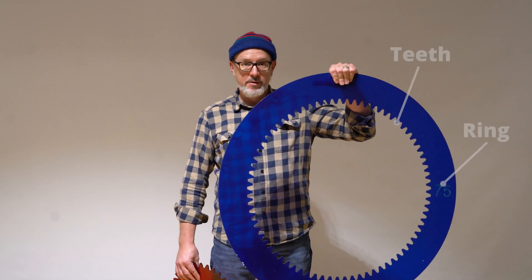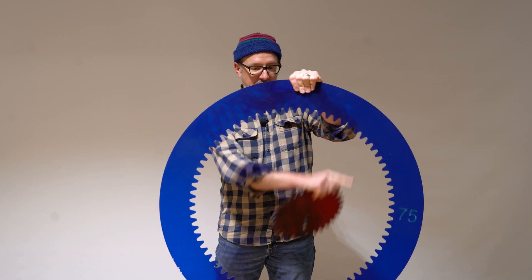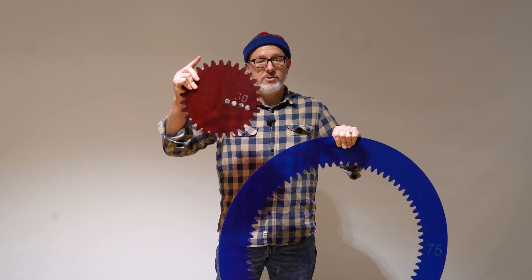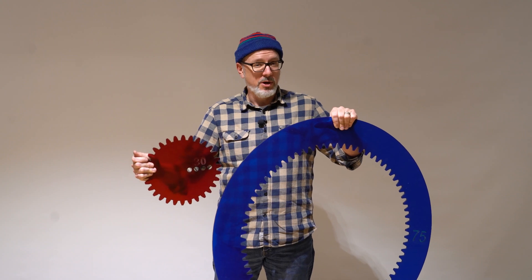Let's talk about the parts of a spirograph. The spirograph has a ring with teeth and a wheel with teeth. Notice that the ring has the teeth on the inside, and the wheel has the teeth on the outside. There are some spirographs that have teeth on the outside, and they're pretty fun to play with as well.